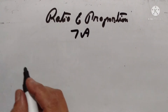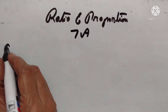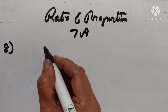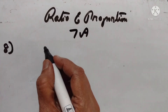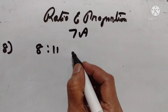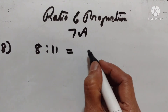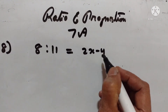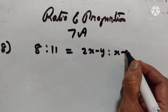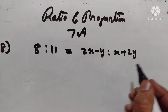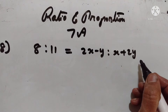Hello students, welcome back. Let's go to xs7a, 8th problem. If the ratio between 8 and 11 is the same as the ratio of 2x minus y to x plus 2y, find the value of 7x upon 9y.